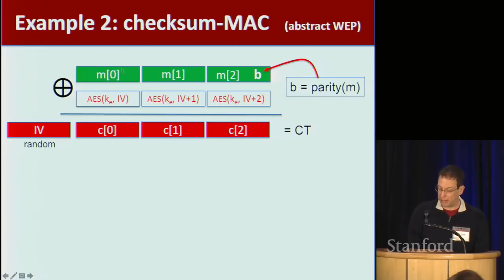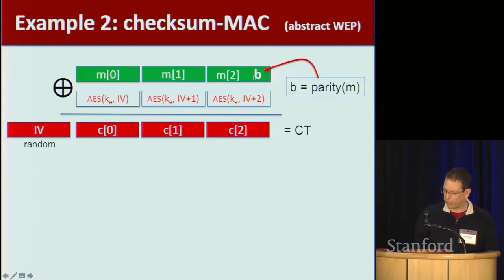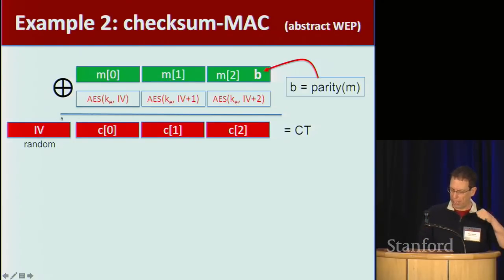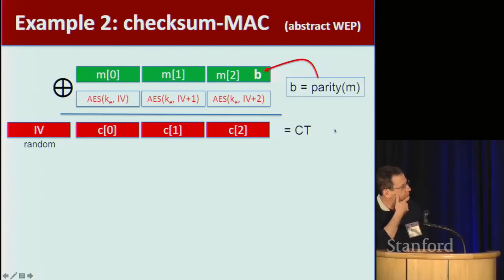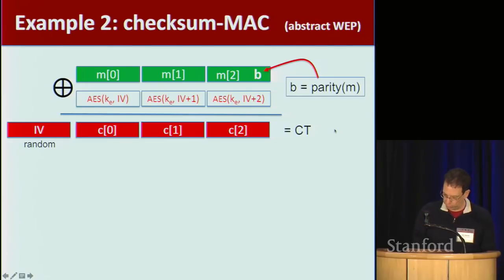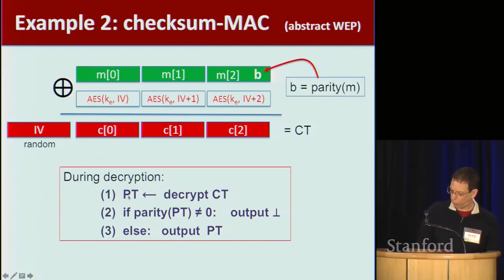So here's how WEP works abstractly. We have our message, and to the message we're going to append parity bits — a checksum basically. We do integrity by appending a checksum to the message and then encrypting the message and the checksum. Let's pretend the checksum is literally just a single parity bit. We do the same counter mode encryption: encrypt IV, IV+1, IV+2. We have our random IV and our ciphertext. The way decryption works is you decrypt, check if the parity bit is correct, and if it's incorrect you output error; if correct you output the actual plaintext. That's supposed to prevent the adversary from mucking around with the ciphertext.